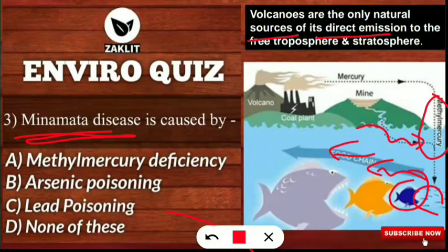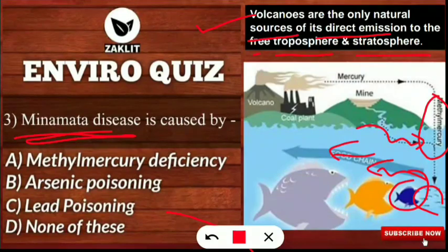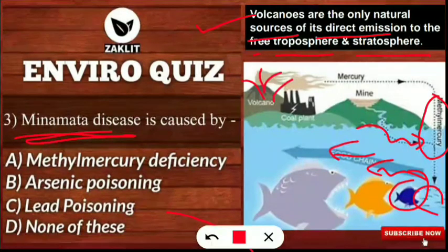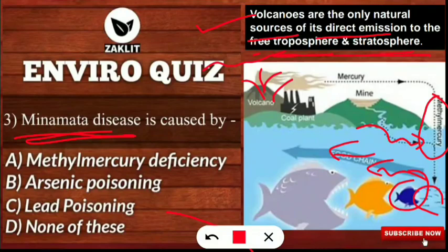Volcanoes are the only natural source of mercury's direct emission. You should note that down — mercury from volcanic eruptions goes to the free tropospheric and stratospheric region. When a volcano erupts, it releases mercury as the only natural source of mercury emission going into the troposphere as well as the stratosphere, which is also very harmful.